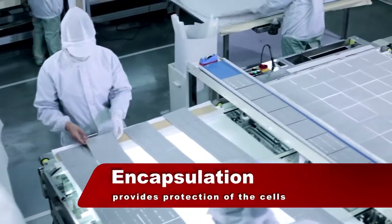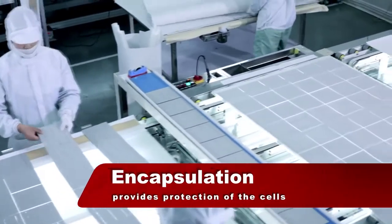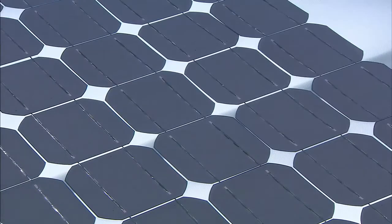The interconnected cells are placed in a sandwich structure comprising a front sheet of tempered low-iron glass, a layer of EVA, the solar cells, another layer of EVA, and a back sheet.